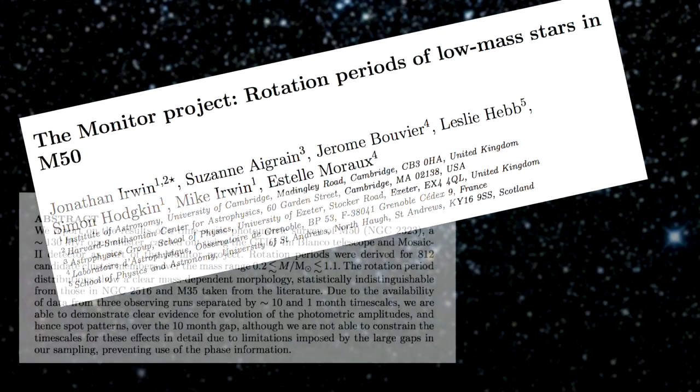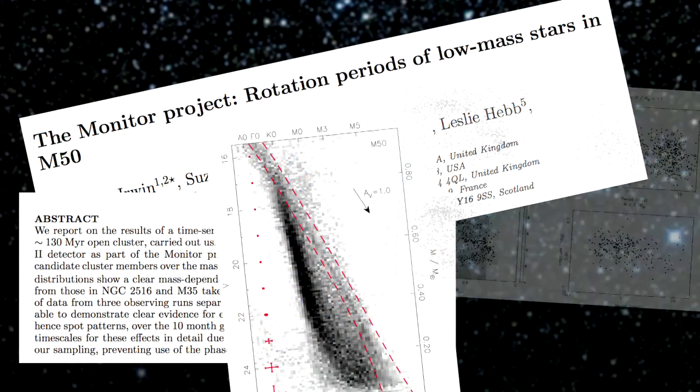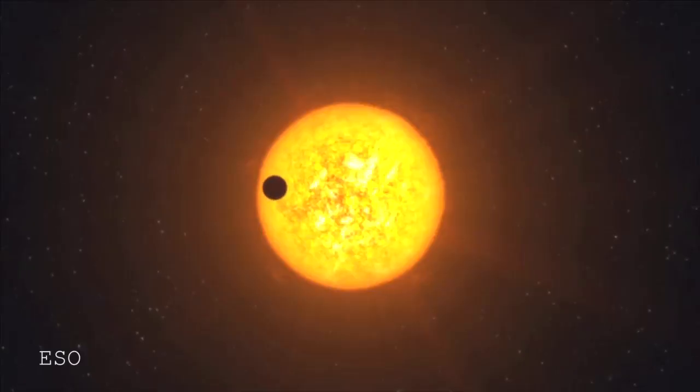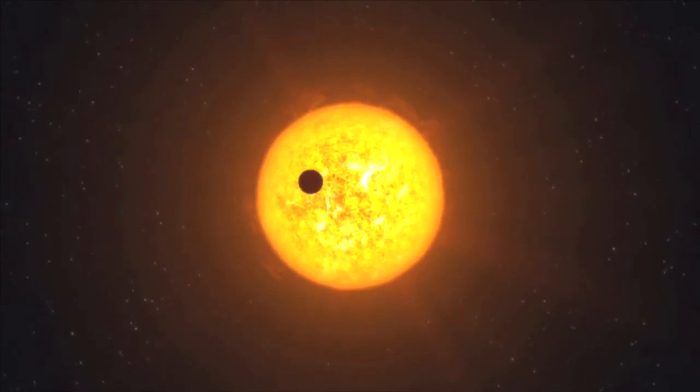To find something interesting to say about M50, I found a paper that was part of a monitoring program looking at the variability of stars in clusters like this. Stars can vary for intrinsic reasons — because they're big pulsating stars or cataclysmic variables — or for extrinsic reasons, like something passing in front of them causing a dimming, which is how we're uncovering lots of extrasolar planets. Or simply because they're rotating and have star spots, causing little 1% dips in brightness.